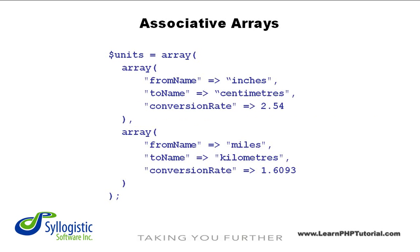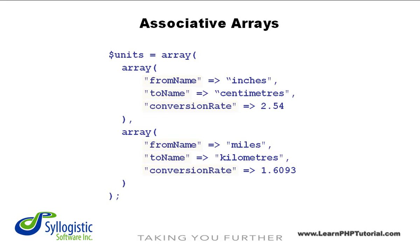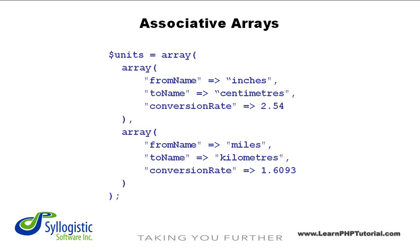Whether a key is inferred or explicit, all arrays in PHP are associative. This means that for each element in an array, there's always a key-value pair. More commonly than numbers, strings are usually used as keys for arrays in PHP. This way, you can logically organize the data stored in an array as key and value pairs.